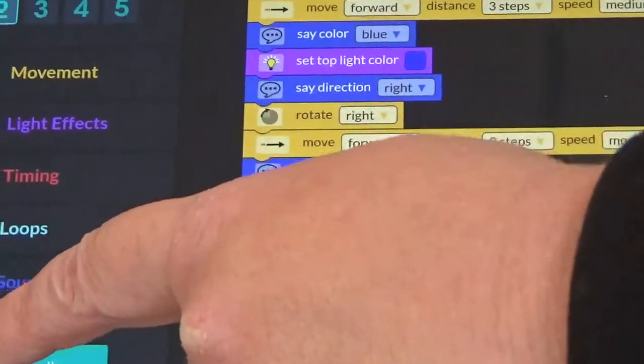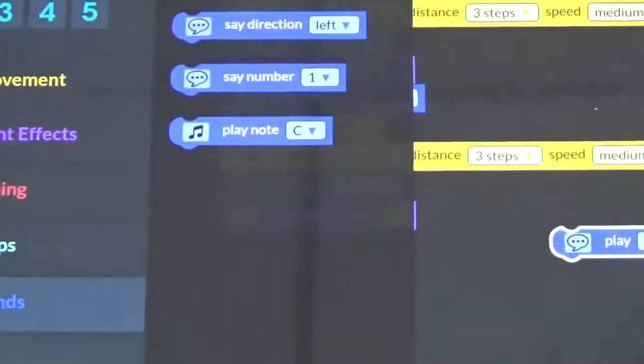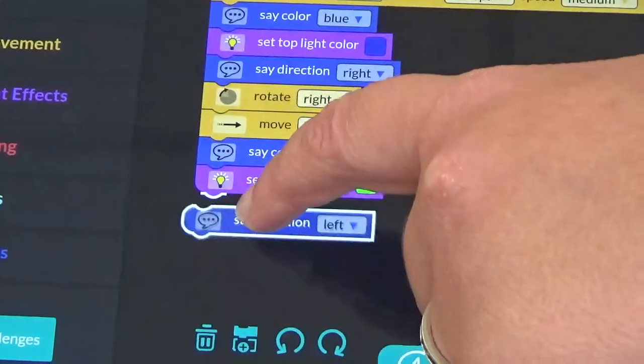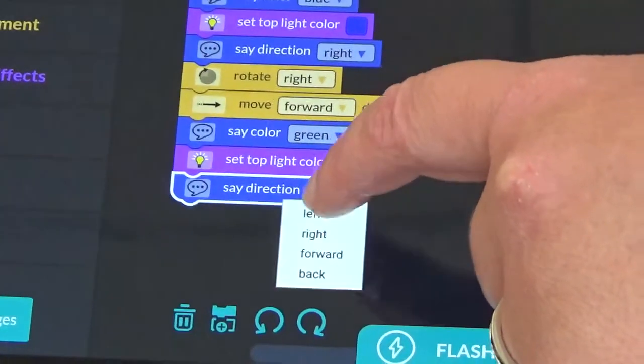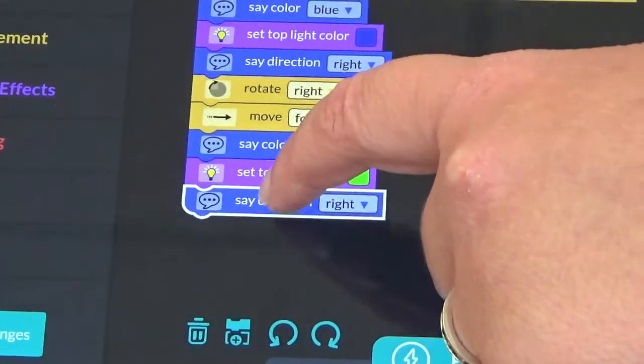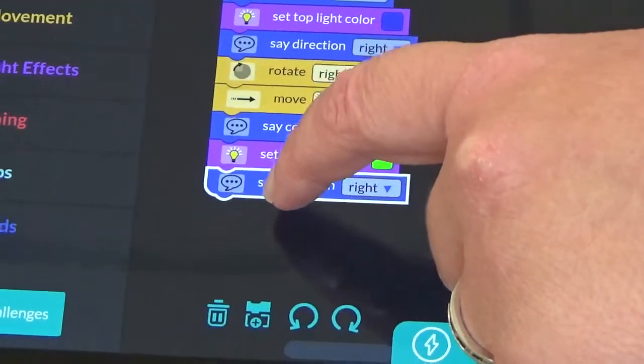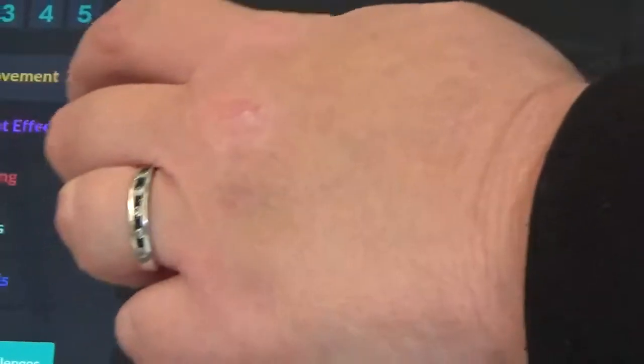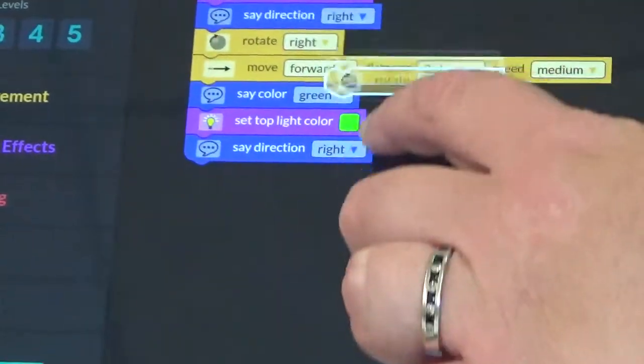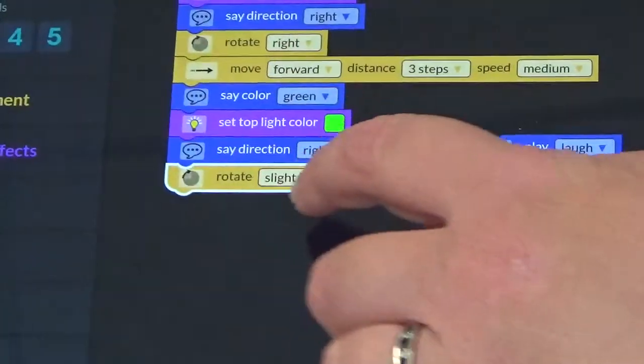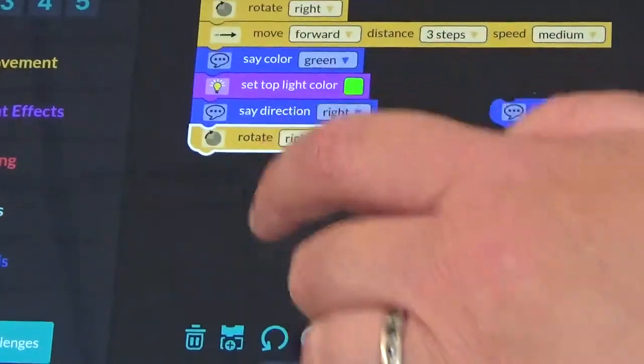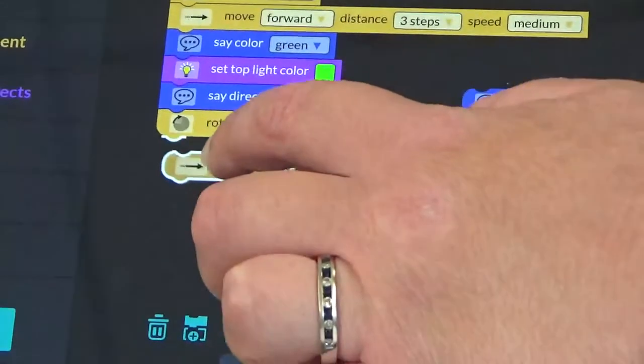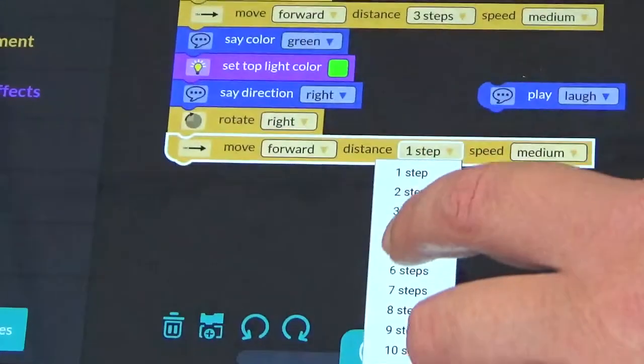It looks like he has to turn right. So, what we're going to do is we're going to click on sounds right here. Then we're going to look at say direction. We're going to take that block, attach it to the last block. Then we're going to select right. Then we're going to go to movement. We're going to find our rotate block. We're going to attach it on, and then we're going to select the direction to right. Then we'll go back to movement. We're going to place the move forward block into place. Have him move forward three steps.